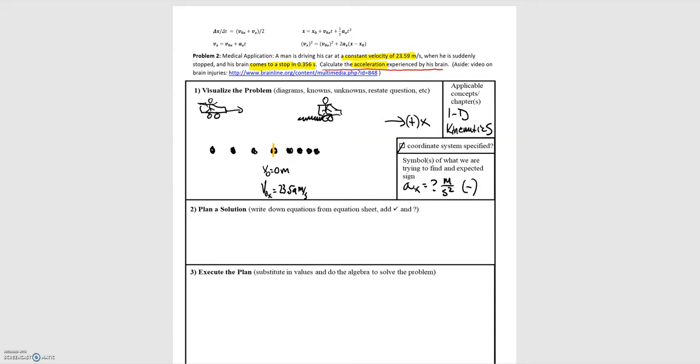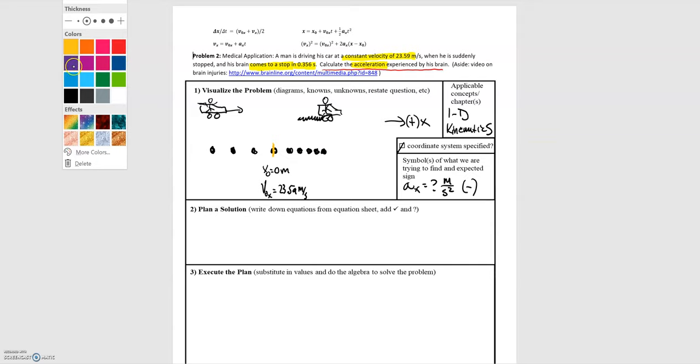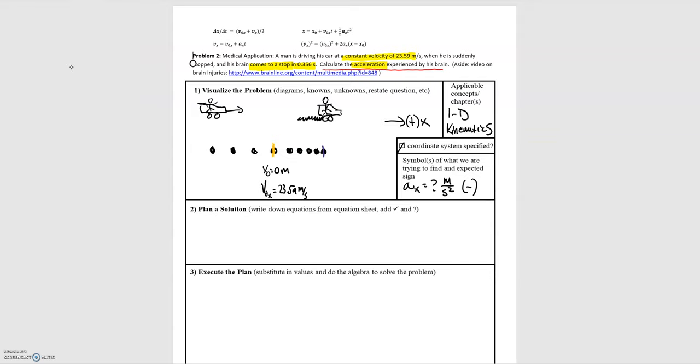And now for the final position, I'm just going to give myself a little more room. Just add another dot here. The final position we know here, we know that the person's brain comes to a stop. So we know that the final velocity is equal to 0 meters per second.